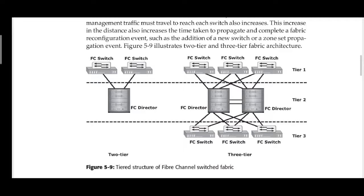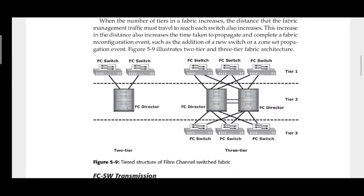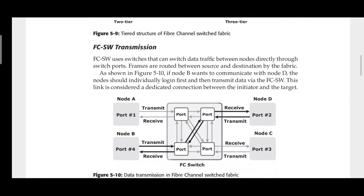The diagram shows the two-tier and three-tier architecture of FC switches. The FC director governs the data and is normally at tier two, while FC switches are at tier one. In a three-tier architecture, additional FC switches are present at tier three, all connected to the director. Data governance is handled by the directors.